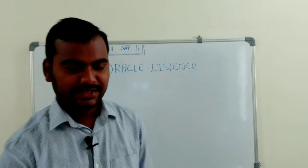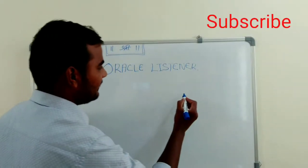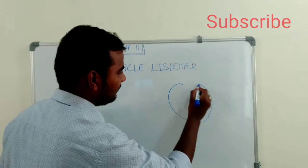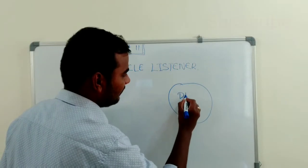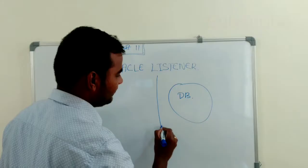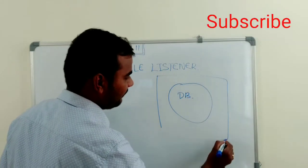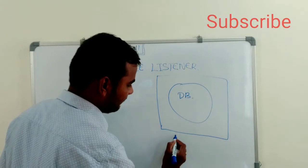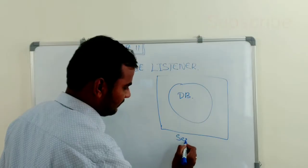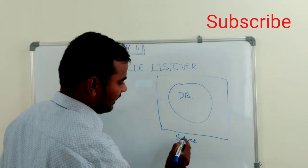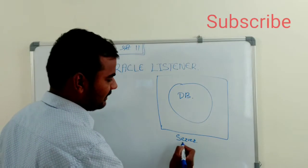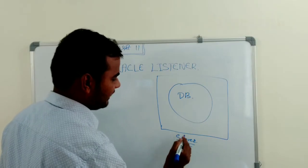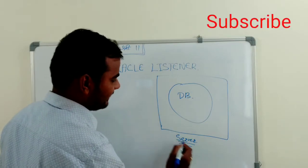So I will just take one example over here. Let's say this is your database, okay, and on this database we know this is our server, and on the server there is always one process we call it as a listener.